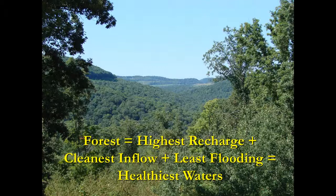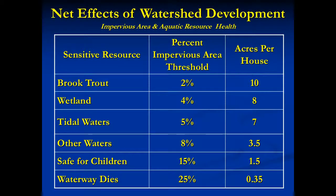Scientists have found that a minimum amount of forest must be retained in a watershed to keep waters in a condition suited to sensitive fish, wetting, or even swimming. To preserve high quality waters, a minimum of half the watershed must be forested. The poorest quality waters have less than 30% forest cover. Beginning with a study published in 1979, a number of researchers have documented a direct relationship between the health of aquatic ecosystems and the extent of watershed development.